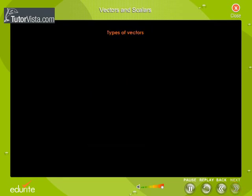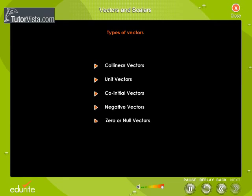Types of vectors: Vectors can be classified as collinear vectors, unit vectors, co-initial vectors, negative vectors, zero or null vectors, and position vectors.